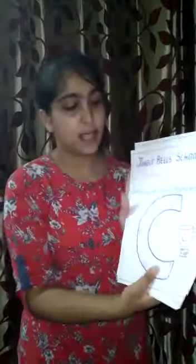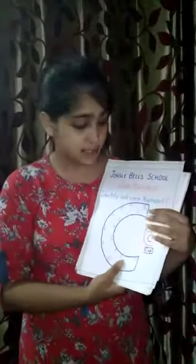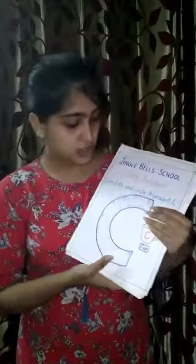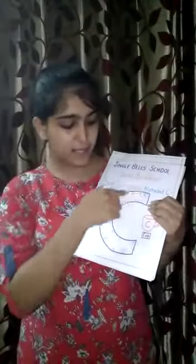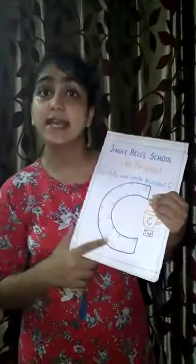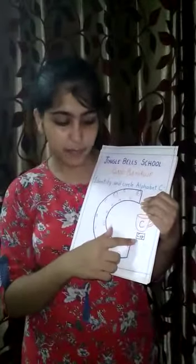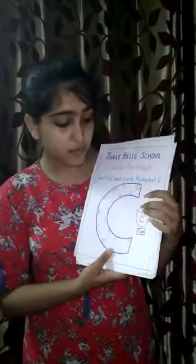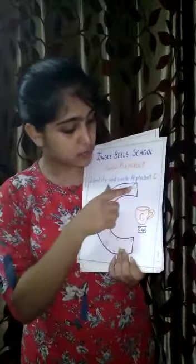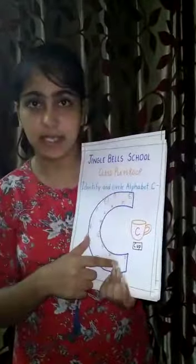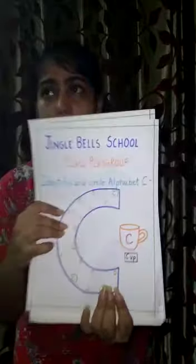The first worksheet that we have given today is this one: identify and circle the alphabet. First tell me, which alphabet is this? This is C. What you have to do — you have to circle all the small C inside this big C.